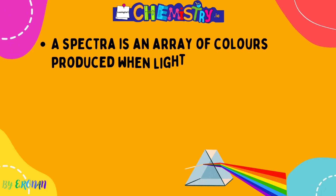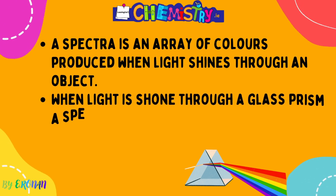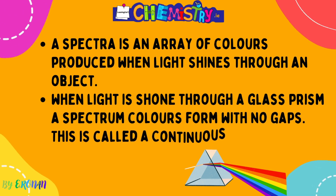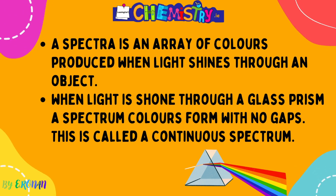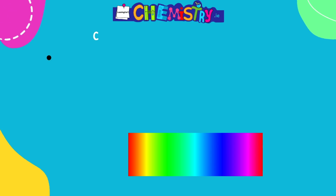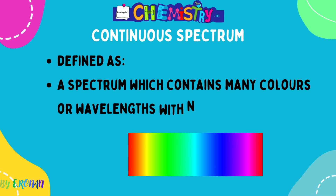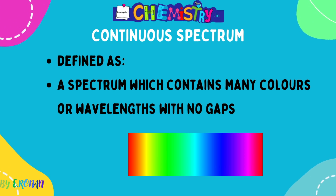A spectrum is an array of colors produced when light is shone through an object. For example, when white light shines through a glass prism, a spectrum of continuous colors forms with no gaps — this is called a continuous spectrum. A continuous spectrum is defined as a spectrum which contains many colors or wavelengths with no gaps.